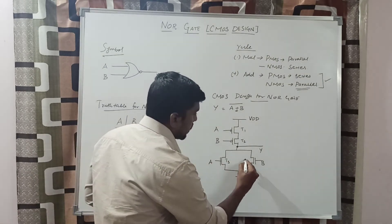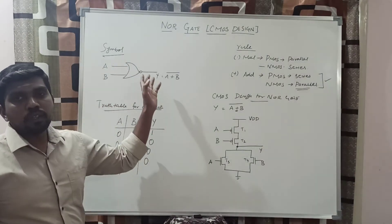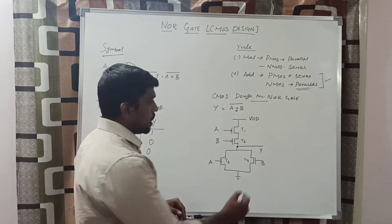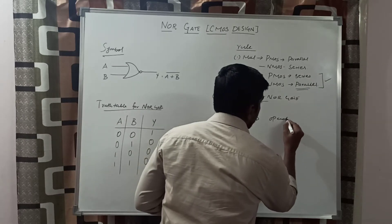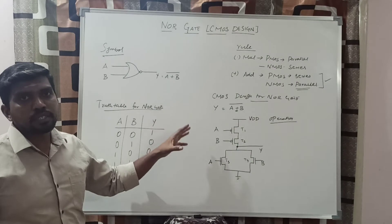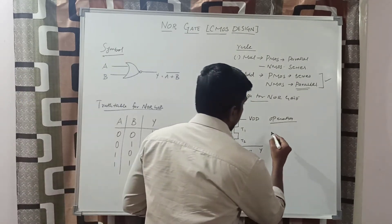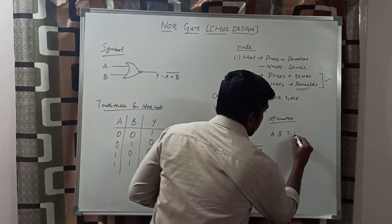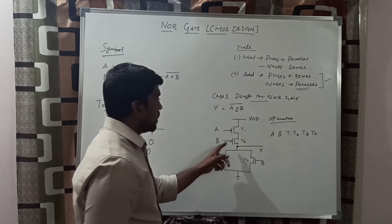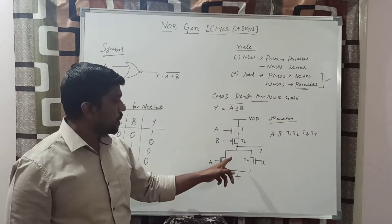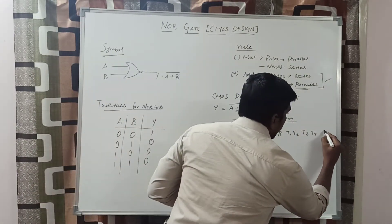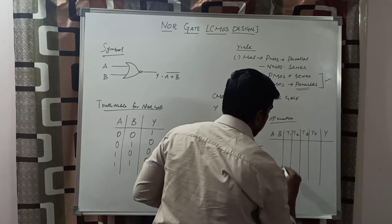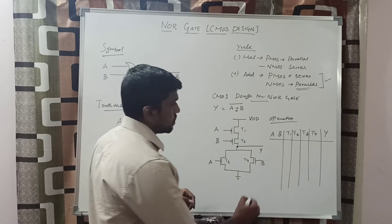So far, you have drawn the symbol, truth table, and then converted the logic level to transistor level. Now we check the operation of this circuit — whether both circuits are producing the same result. First, you write the input values A and B, then the transistor functions. In this diagram, you can use four transistors: T1, T2, T3, T4. The final column is the response of this circuit. We assign the four combinations of input in this table.